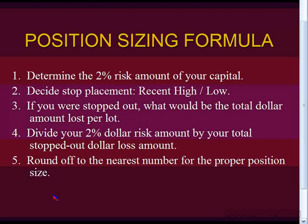Divide your 2% risk amount — that is, 2% of your capital — by your total stopped-out dollar loss amount, by how much you would have lost in that one trade. This will give you the number of lots or units to trade. Just round off to the nearest number for the proper position size.